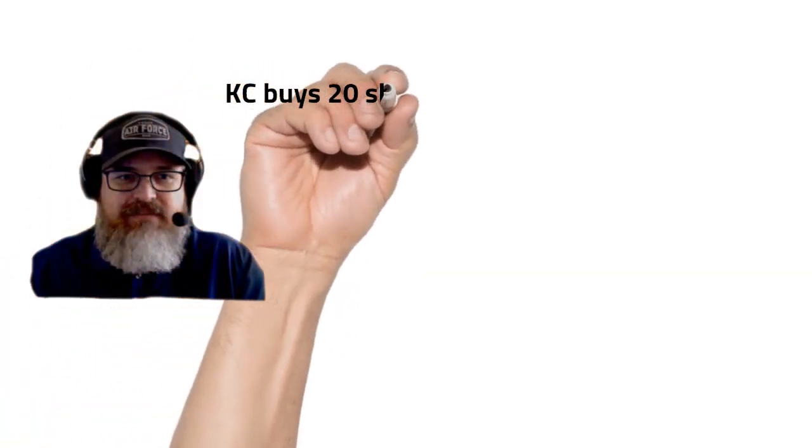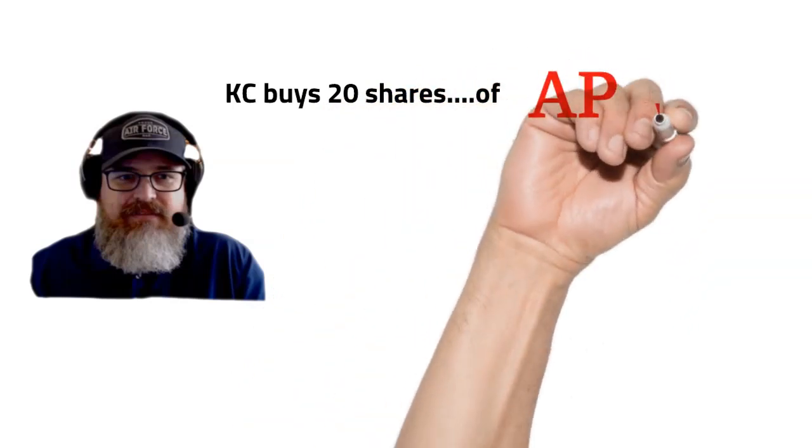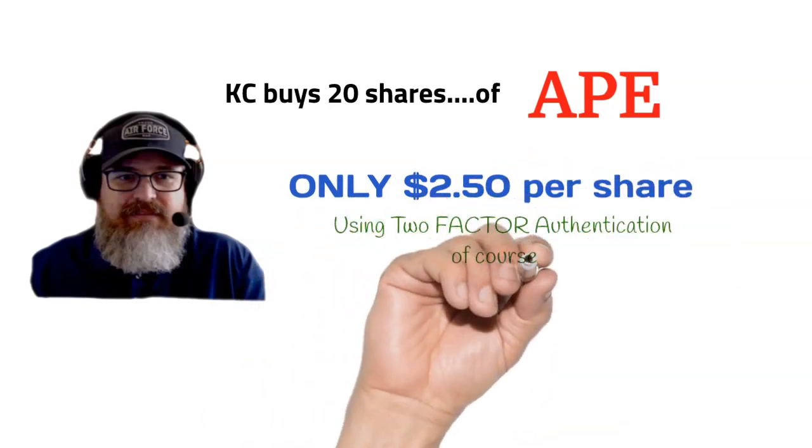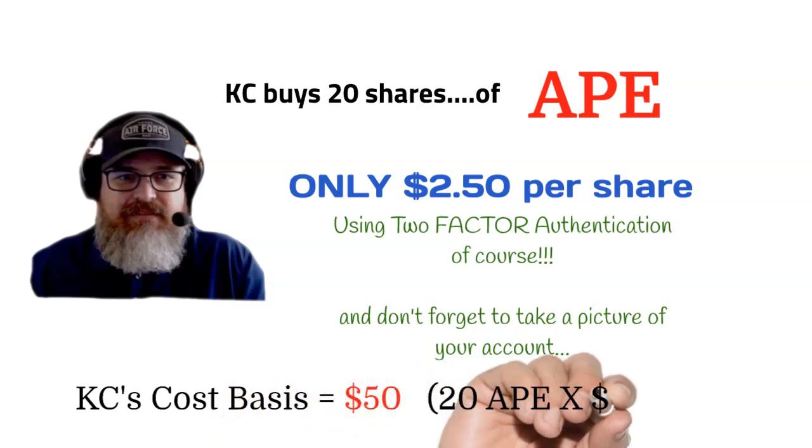But noticing that Ape shares were less than half the price of AMC shares, he sees Ape as the better deal. So KC opens his TD Ameritrade account, utilizing his two-factor authentication obviously, and he buys 20 Ape shares at $2.50. KC's account shows he has a $50 cost basis for his 20 shares of Ape.